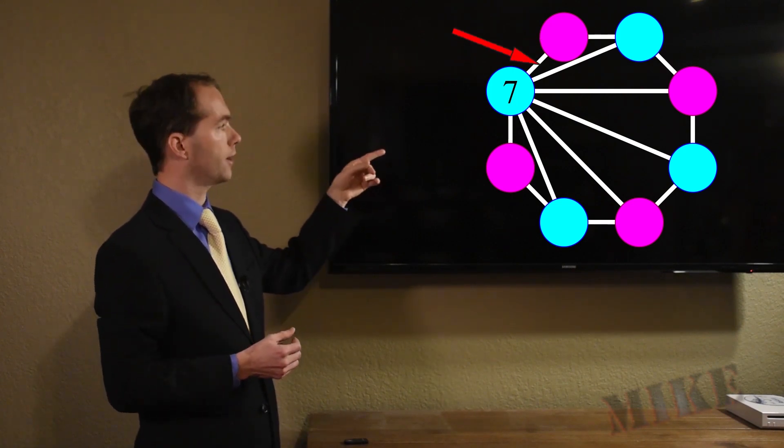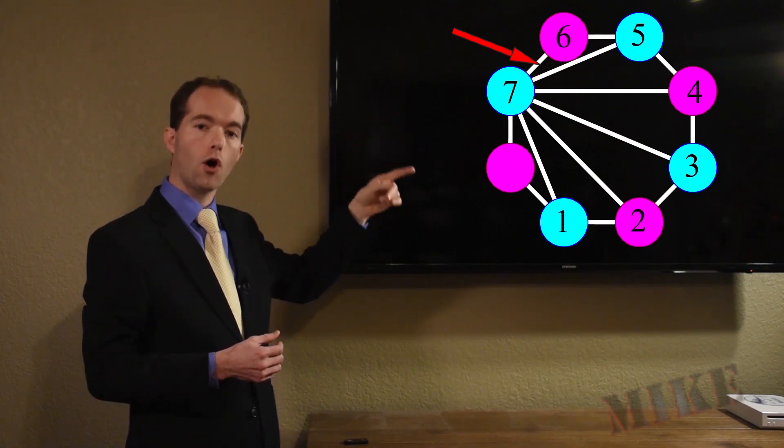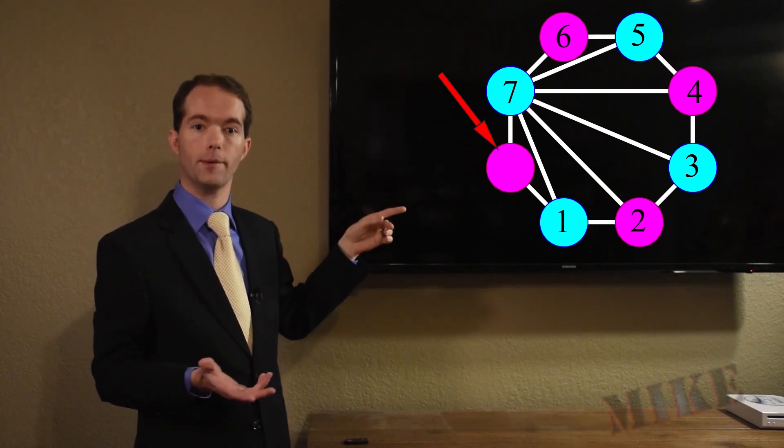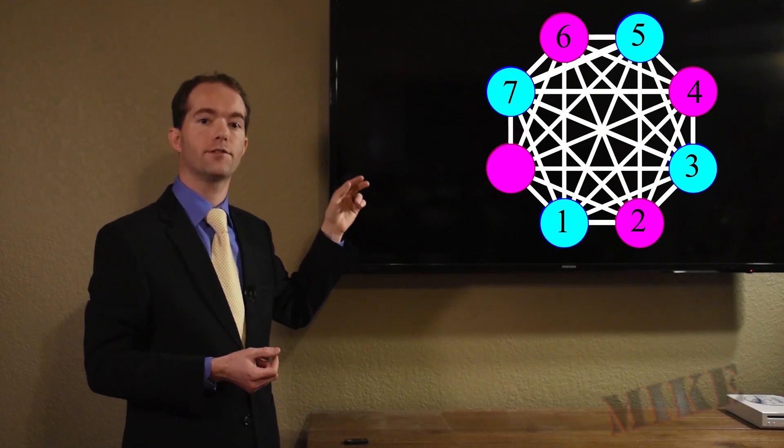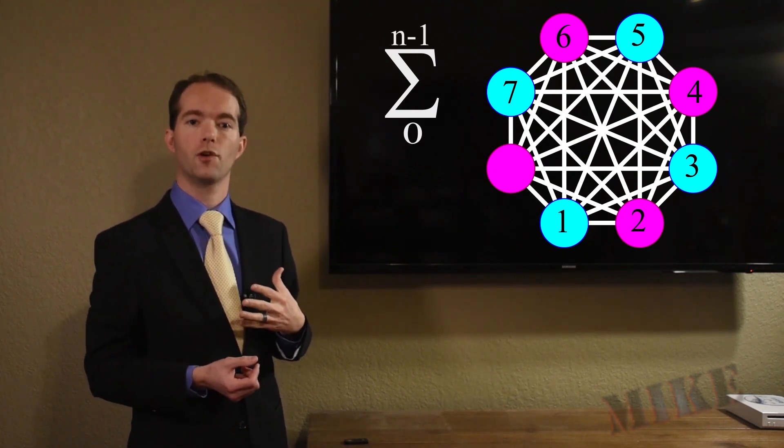And so there's only 6 new relationships, and so on. We go all the way around the circle until we get to the last guy who has no new relationships that haven't already been counted. So the formula is the sum of the numbers from 0 to n minus 1, because we don't count the relationships with ourselves.